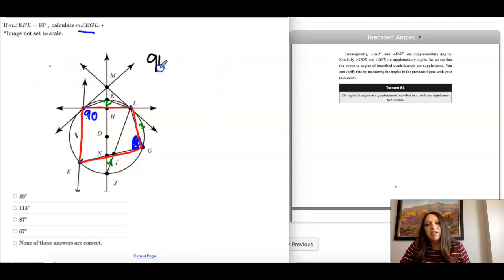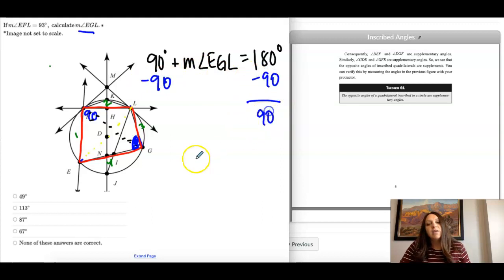So this means that if I have 90 degrees and I add the measure of E, G, L, what I'm looking for, supplementary means they add to 180 because they're opposite angles. So that would mean the other two also add to 180. So 180 minus 90 is 90. So if this is 90, this is 90. Then all four would add to 360. So none of these are correct. It would be 90.